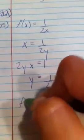I'm going to multiply both sides by 2y and then divide both sides by 2x. So F inverse is going to be 1 over 2x. Then I'm going to verify that F of F inverse is indeed the identity function.